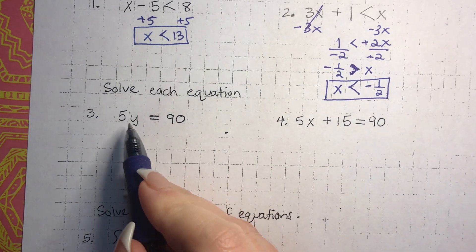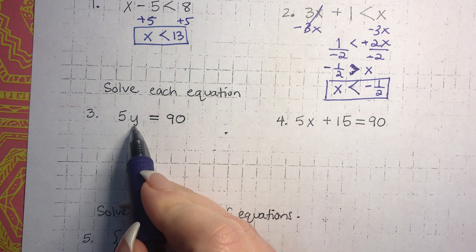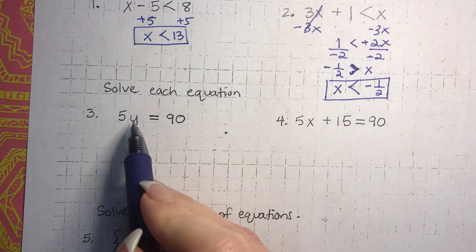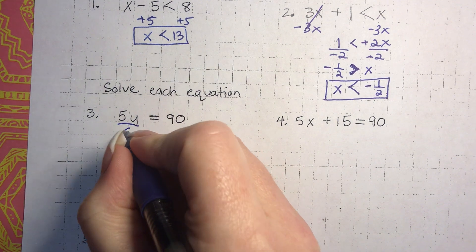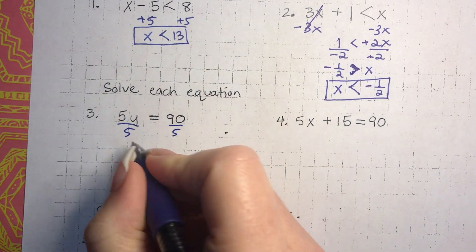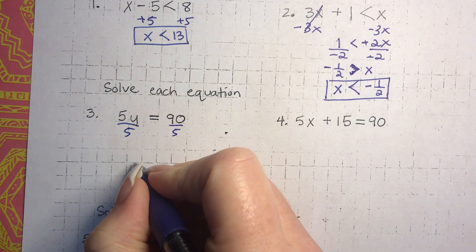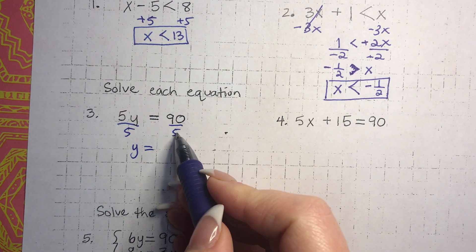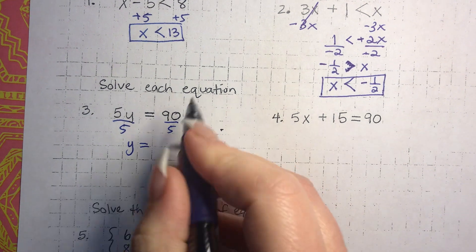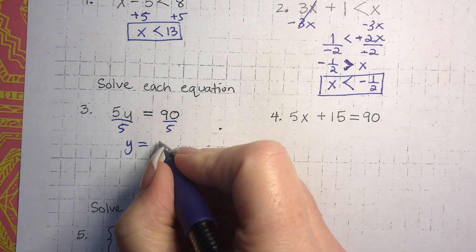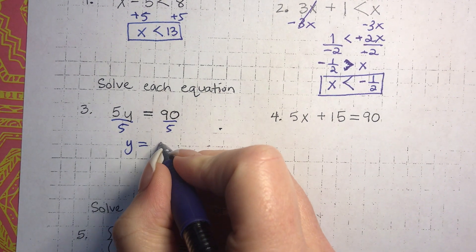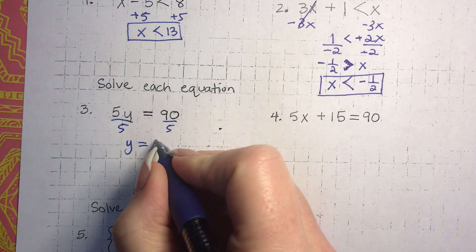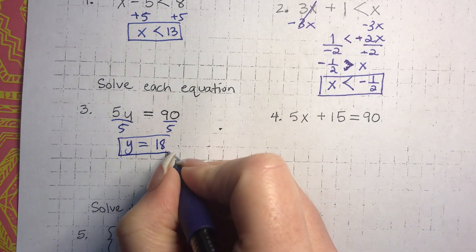Over here on problem 3, we have 5y equals 90. We're going to get y by itself using the inverse operation. 5y is the same thing as 5 times y, so we're going to divide both sides by 5. 5 divided by 5 is 1, 1 times y is y, and 5 goes into 90 eighteen times. So y equals 18. If you got that, awesome.